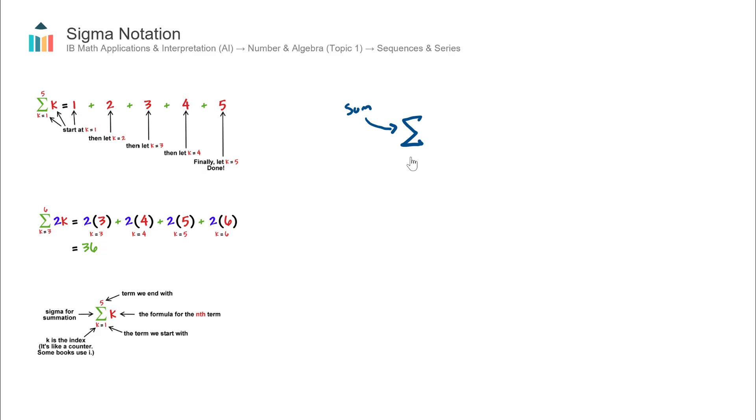We have a number on the bottom of the symbol, k equals 1. This is known as our starting point. Then we have a number at the top, let's say 4, and this is our endpoint. Let's say our actual formula that we're trying to find out is k plus 3.